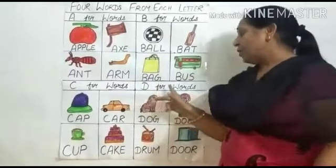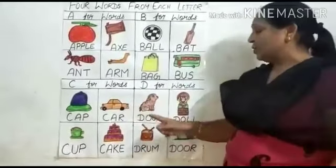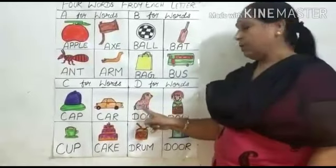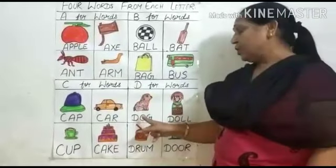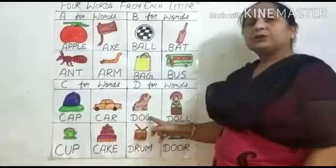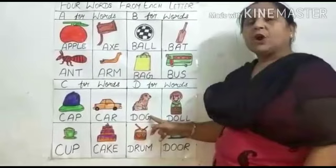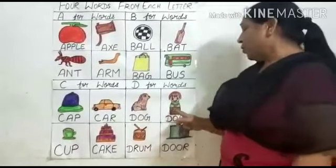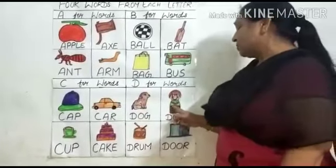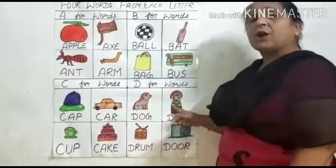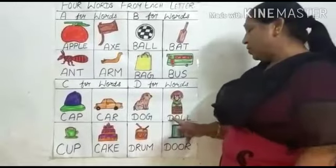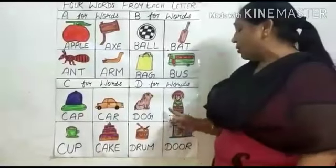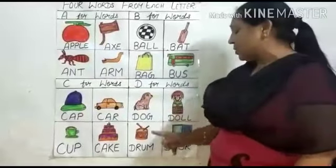D for words. What is this? This is a dog. D-O-G. Dog. Dog means kuttam. What is this? This is a doll. D-O-L-L. Doll. Doll means budiya.